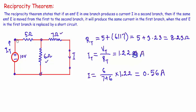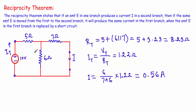After calculating the total current of 1.22 ampere, I will calculate the current through the 7 ohm branch by applying the current divider rule. For the current through this branch, I take the resistance of the opposite branch — that means 6 ohm — and divide it by the sum of 6 plus 7, then multiply by the total current: 6 divided by (7 plus 6) multiplied by 1.22, which gives 0.56 ampere. So when the voltage source is connected at this branch, the current through the 7 ohm branch is 0.56 ampere.